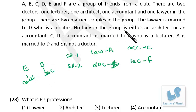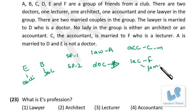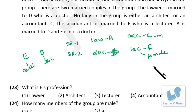No lady in the group is either an architect or an accountant. That means the accountant is male, and the lecturer is female — since they are husband and wife. So E's profession is architect.